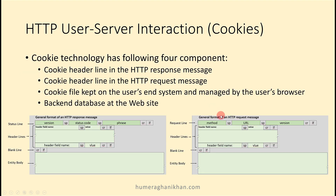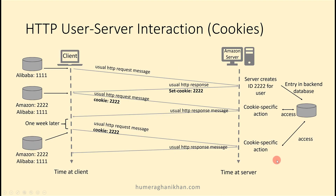When the client is sending a request, it will specify its cookie in the header. The field name used is 'cookie' and the value is the one already provided by the server — for example, 'cookie: 2222'. So the field name is 'set-cookie' when the server is setting it for the first time, and 'cookie' when the client is sending it back. The client specifies the same cookie value that the server originally created for it.